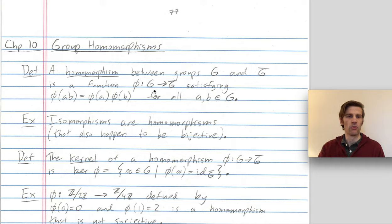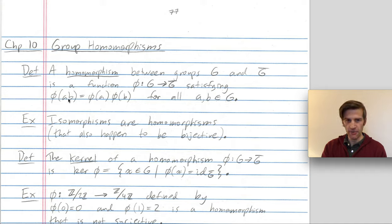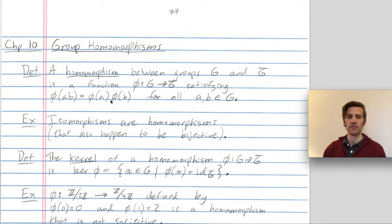A homomorphism between two groups G and G-bar is a function phi from G to G-bar that satisfies this group structure preservation property we've talked about already for isomorphisms. For any inputs A and B, phi of A combined with B has to equal phi of A combined with phi of B. A and B are elements in our first group G, so they're multiplied using the operation in G. Whereas phi of A and phi of B are elements in G-bar, combined using the group operation in G-bar.